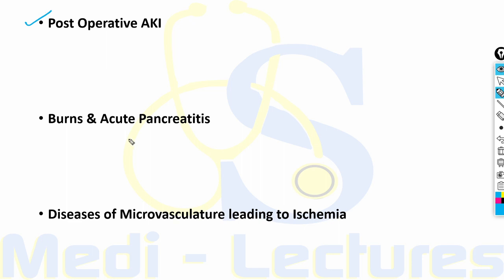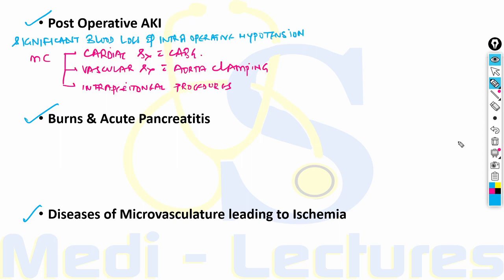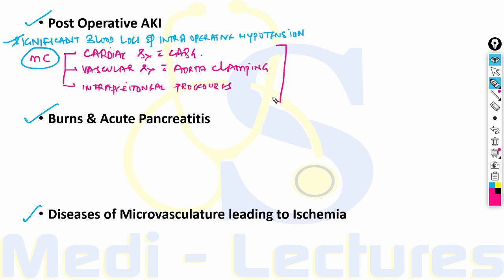Ischemia-associated AKI is a serious complication seen post-operatively, especially after major operations involving significant blood loss and intraoperative hypotension. The most common surgeries include cardiac surgery with cardiopulmonary bypass, vascular procedures with clamping of the aorta, and intraperitoneal procedures. These procedures usually lead to severe AKI requiring dialysis in only one percent of cases.